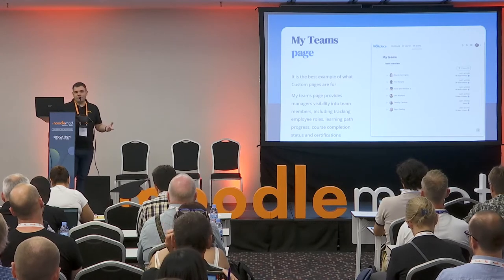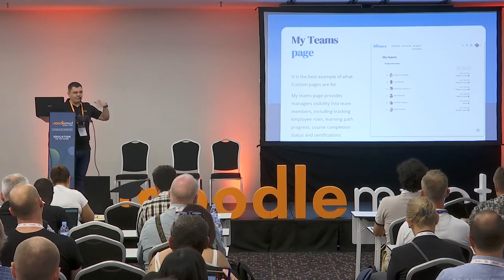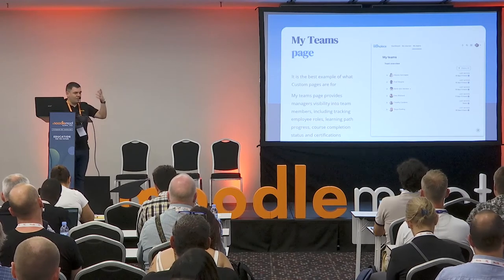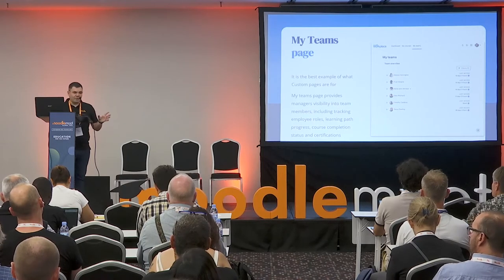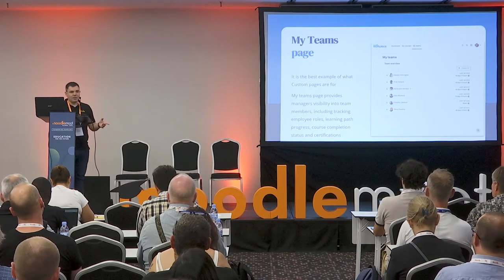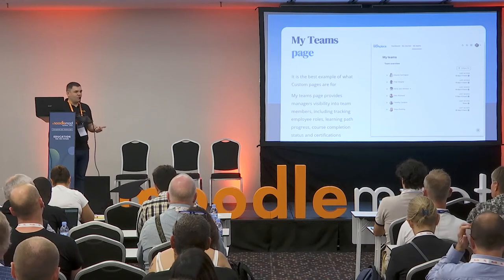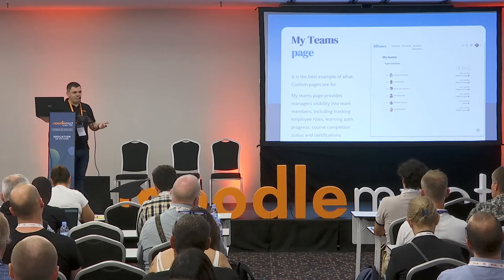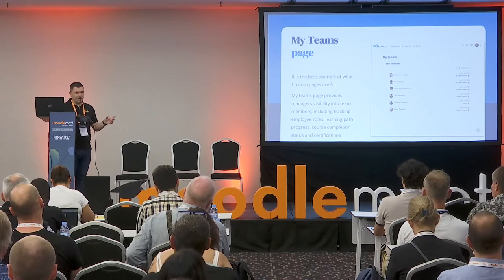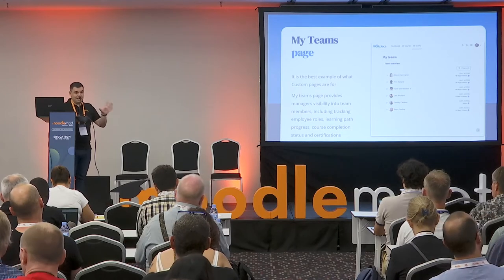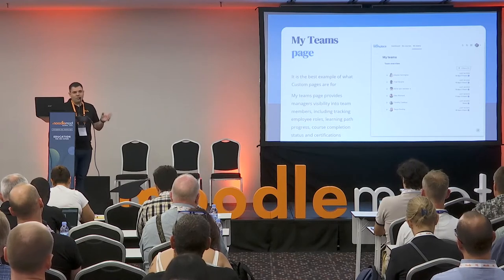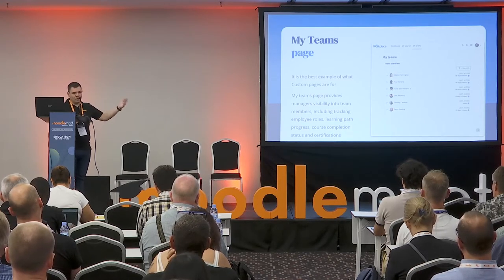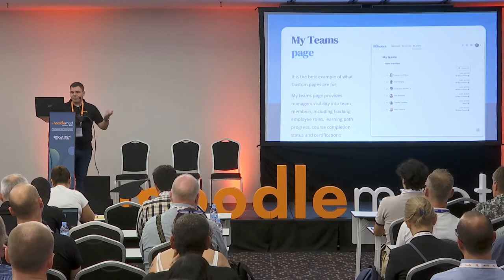Managers, when they log in to Workplace, see the team overview block with information about their teams. We've completely refactored this feature and turned it into a custom page. By default, on installing Workplace, a new custom page is created — a global custom page available to managers and department leads that contains the team overview block. The admin can customize this page: add more blocks, remove it, or create specific pages for other audiences using this block.